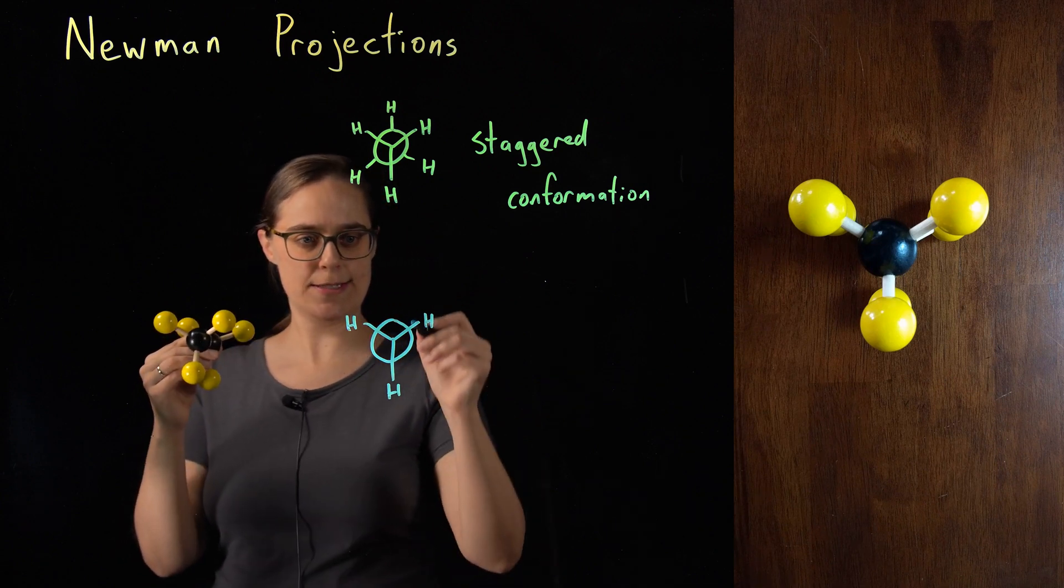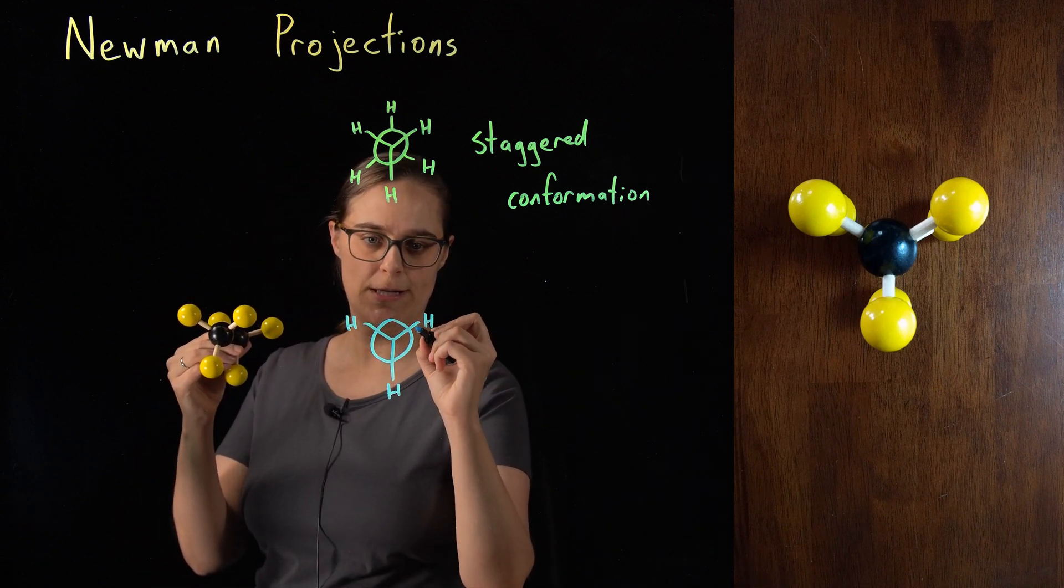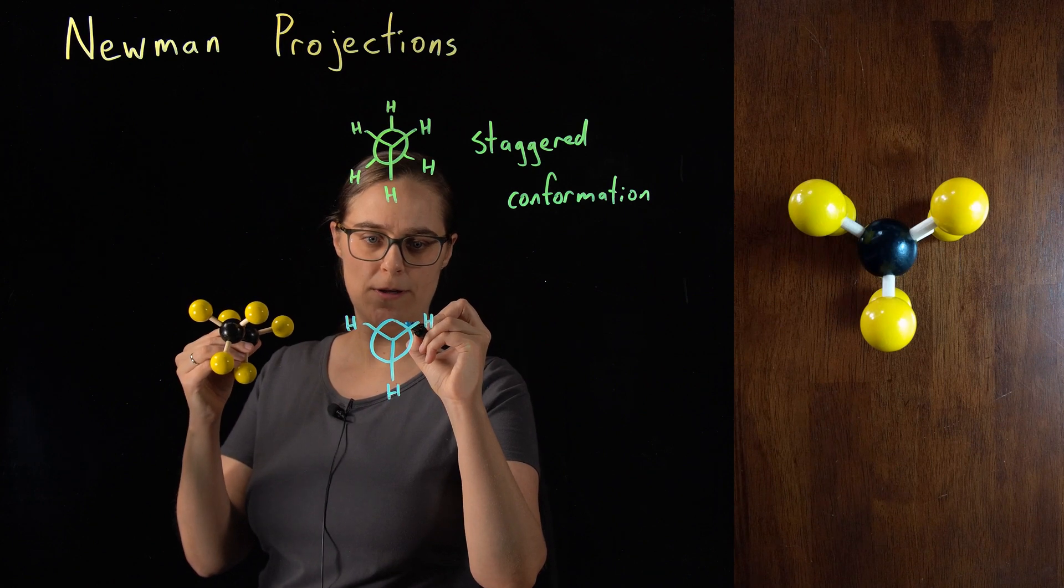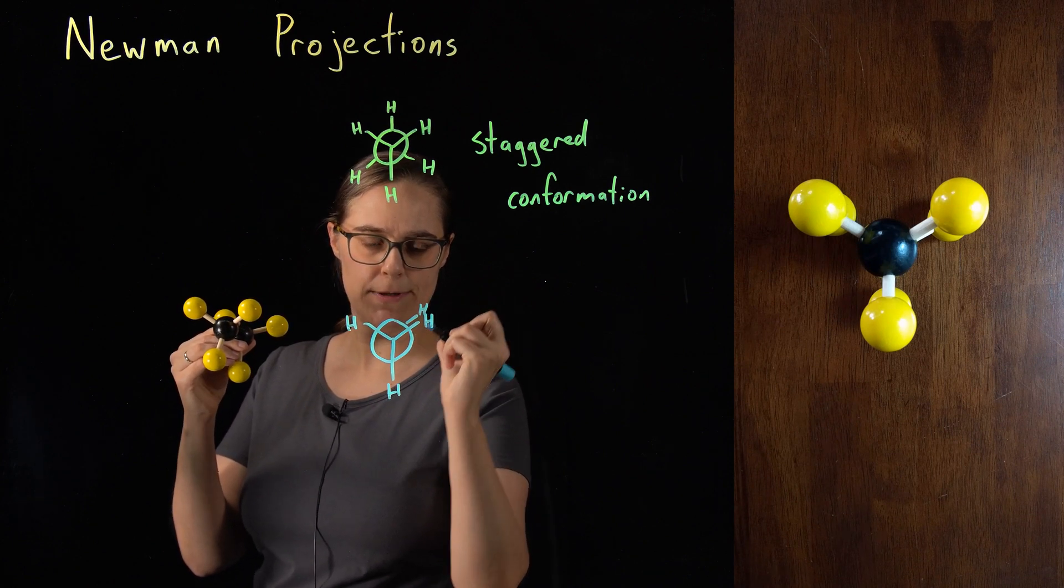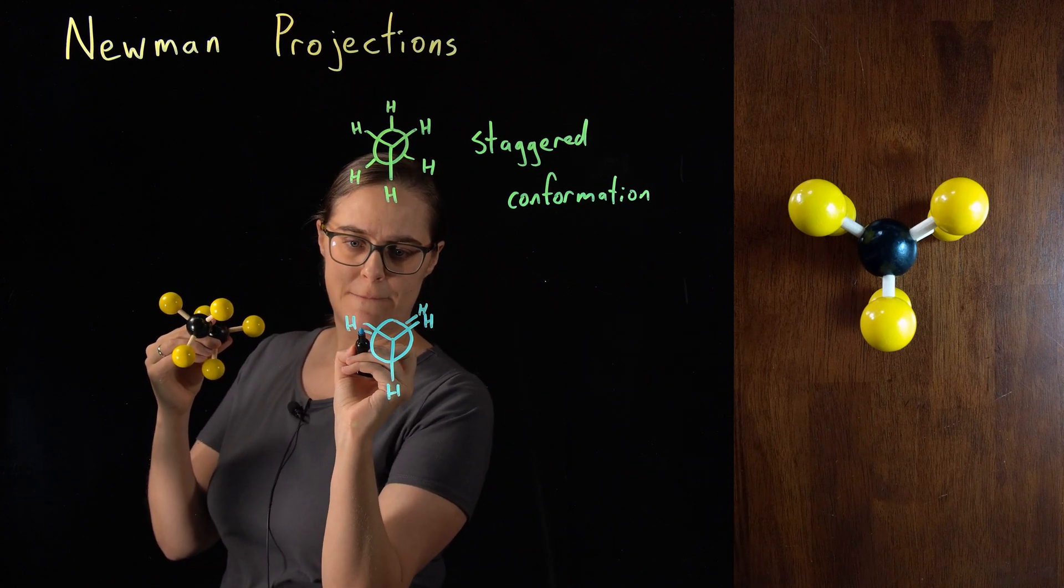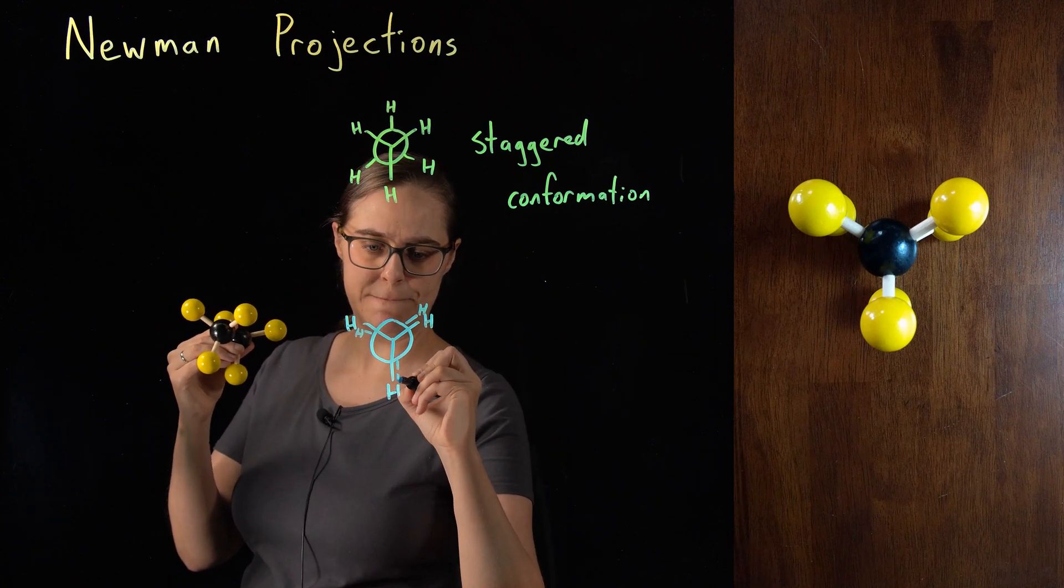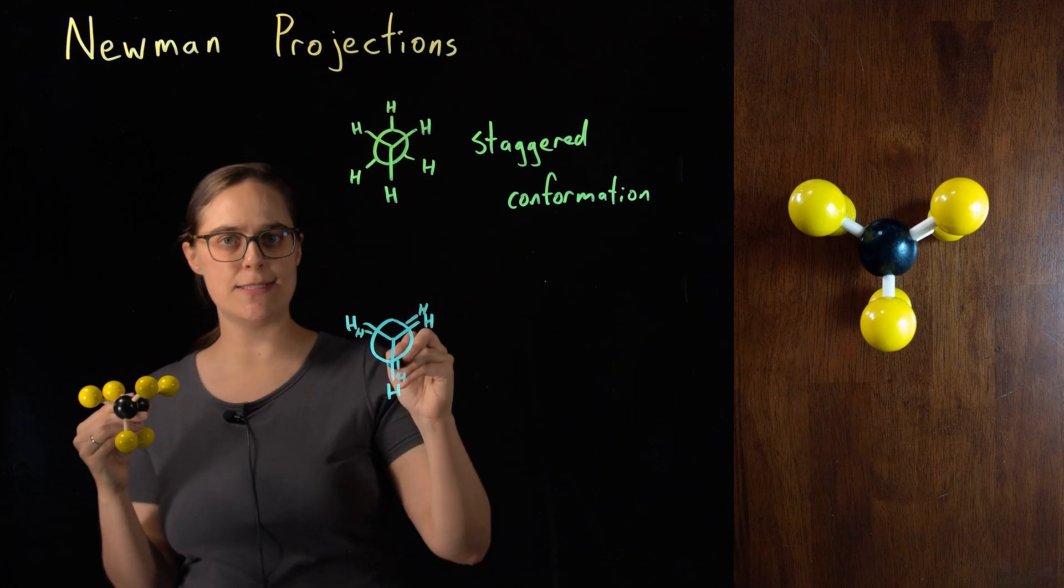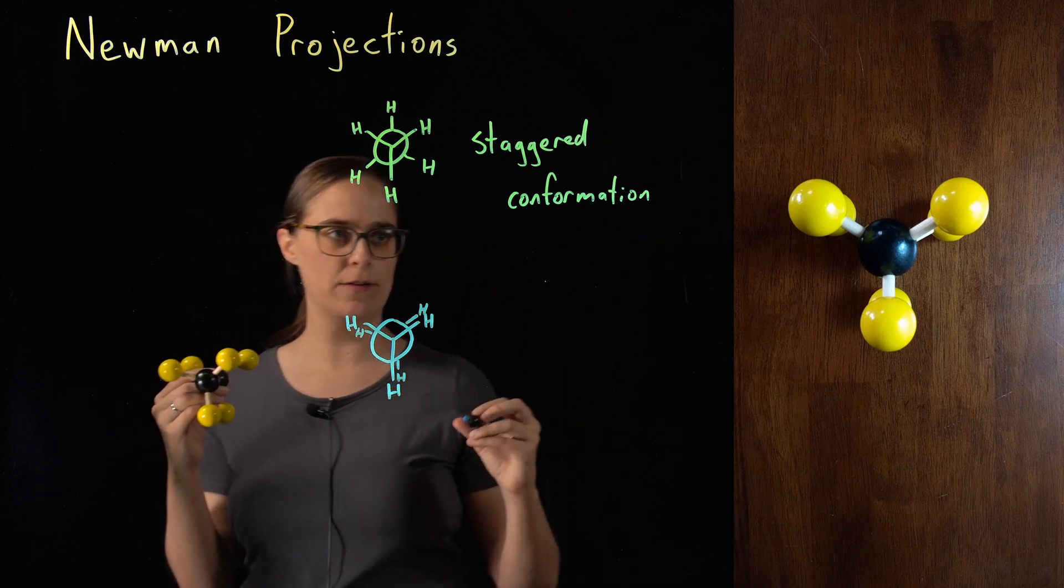I need to draw these still bonded to this circle, the carbon in the back. But I need to draw them as close as I possibly can to the hydrogens in the front. This is called an eclipsed conformation.